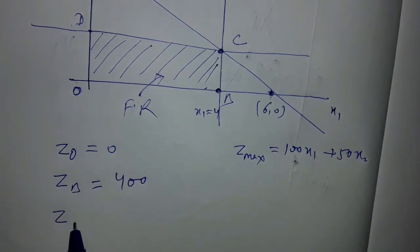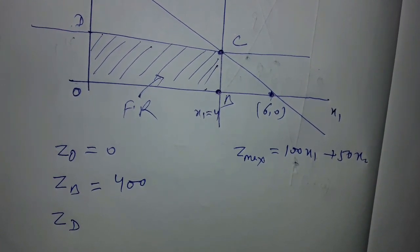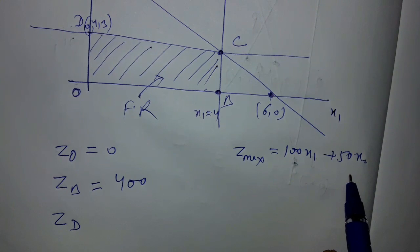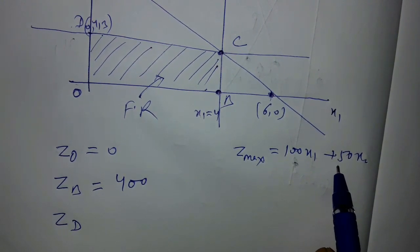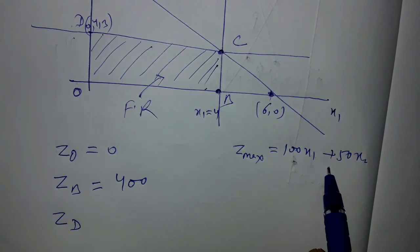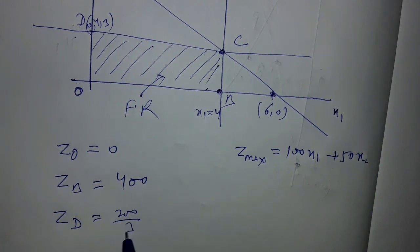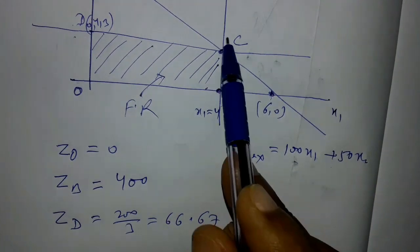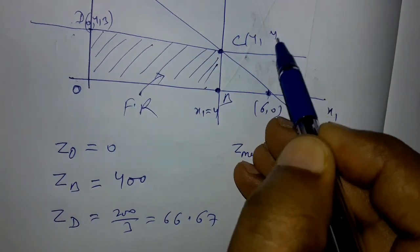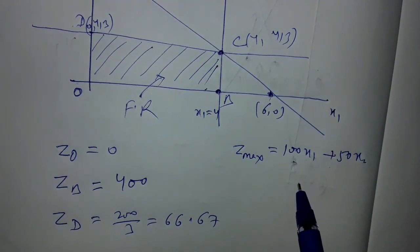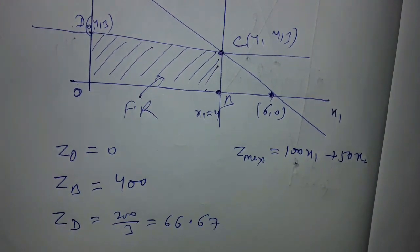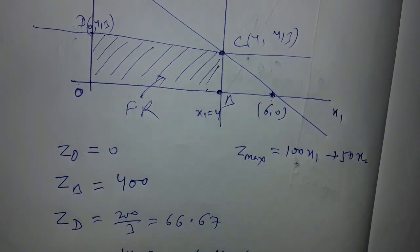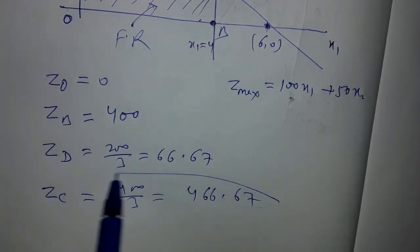At point D, x1 = 0 and x2 = 4/3, so Z at D = 50 × (4/3) = 200/3 ≈ 66.67. At point C, x1 = 4 and x2 = 4/3, so Z at C = 100 × 4 + 50 × (4/3) = 400 + 200/3 = 1400/3 ≈ 466.67.